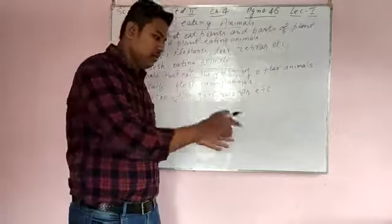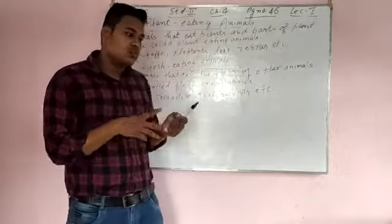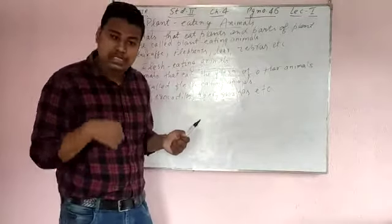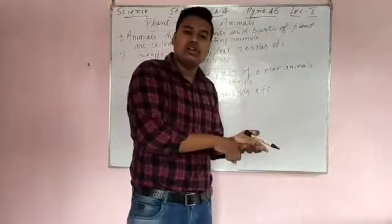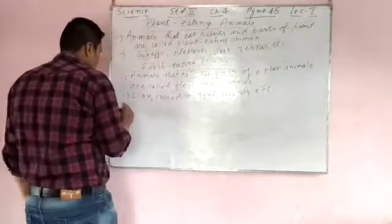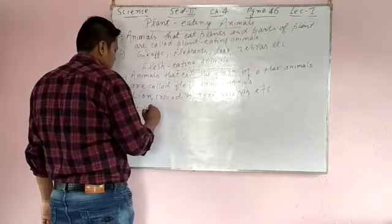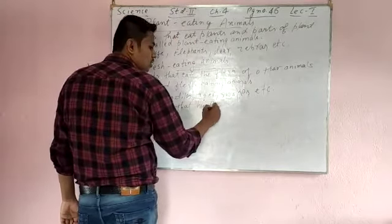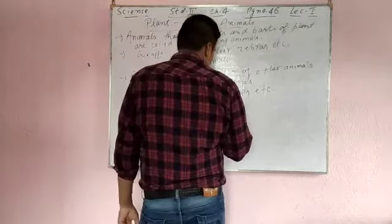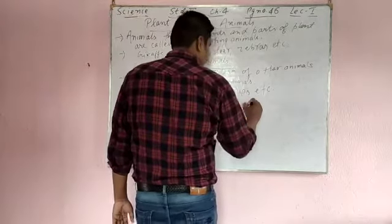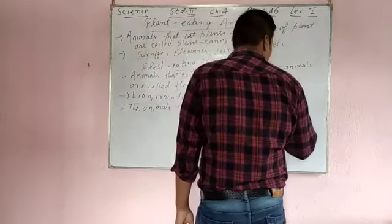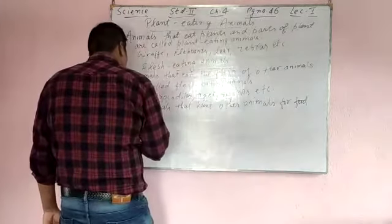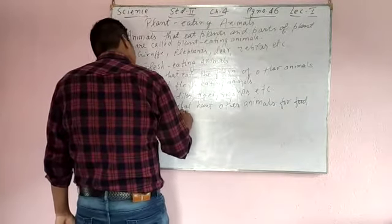Predator is spelled P-R-E-D-A-T-O-R, and that zebra is called the prey. Because I am the lion and in front of me there is a zebra — I will hunt first, then kill, then eat. So I will be called a predator, and that zebra will be called prey. The animals that hunt other animals for food are called predators.